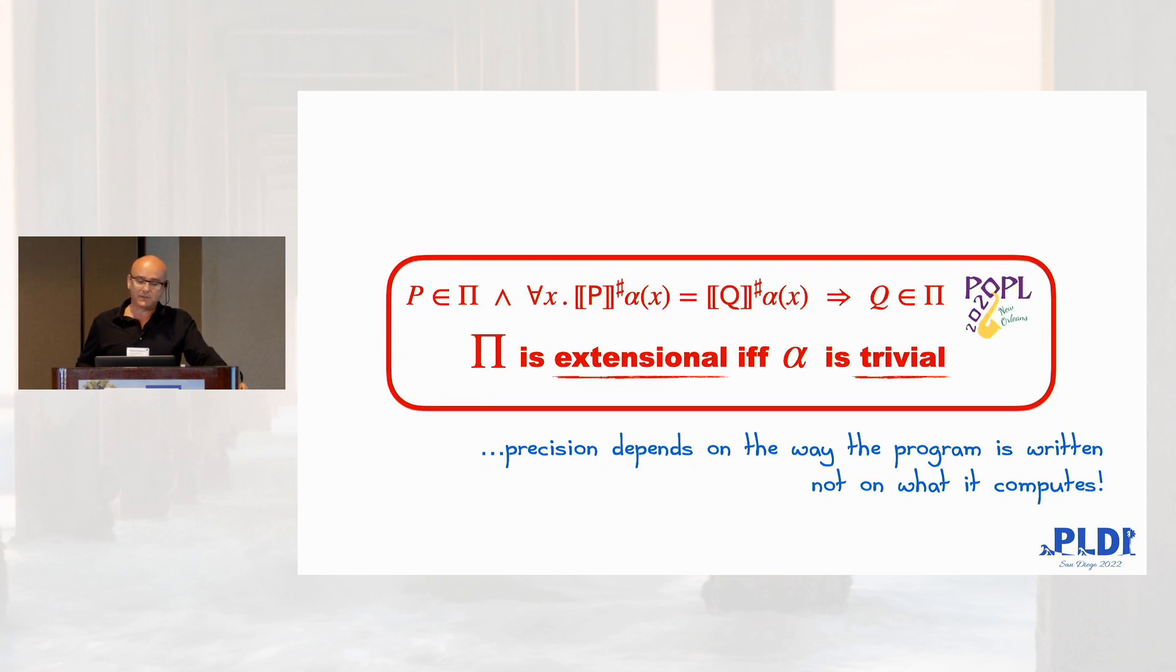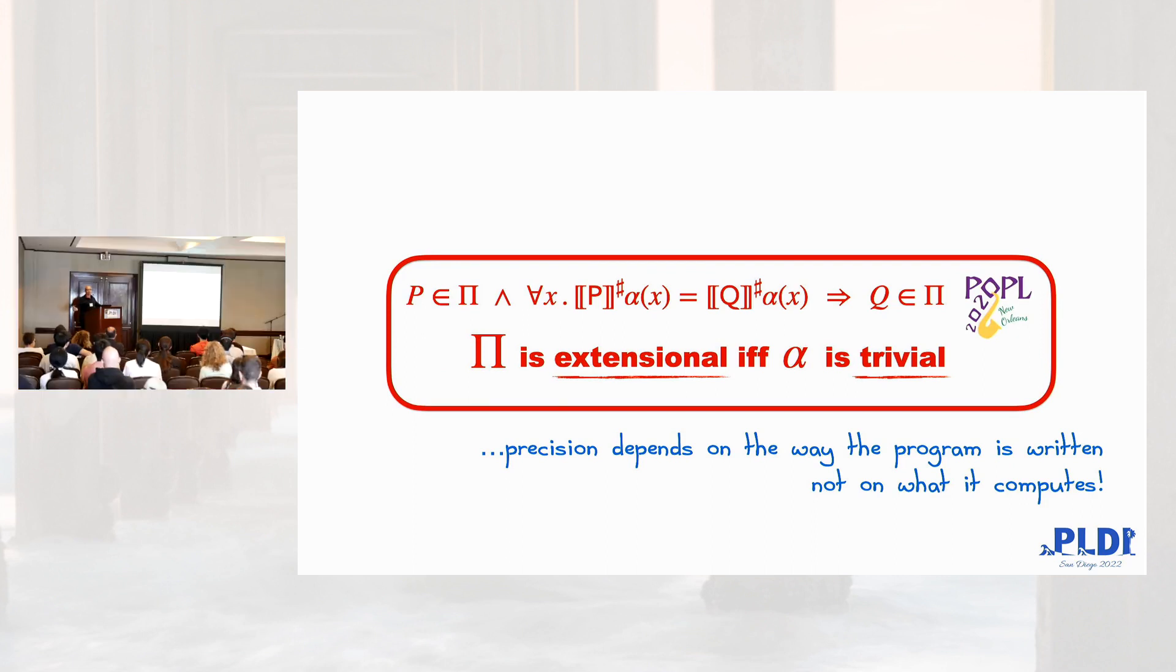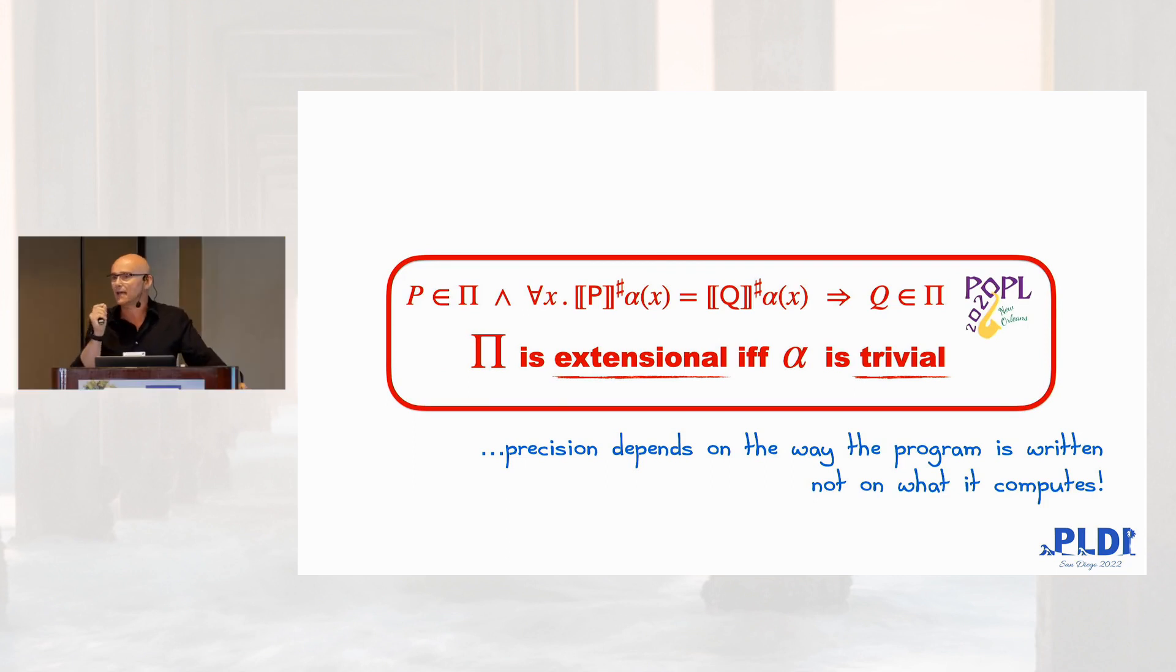The second is that the precision of the abstract interpreter depends on the way the code is written, not on the function computed. It strictly depends, it's strictly intentional, it strictly depends upon the way you write code. This is a recent result by Inpopul 2021.